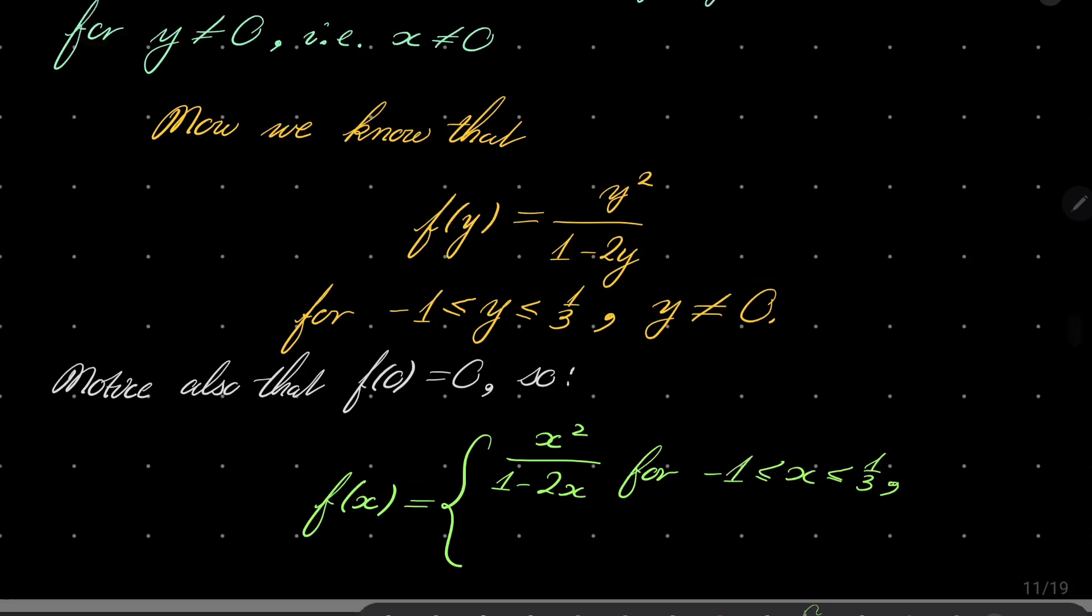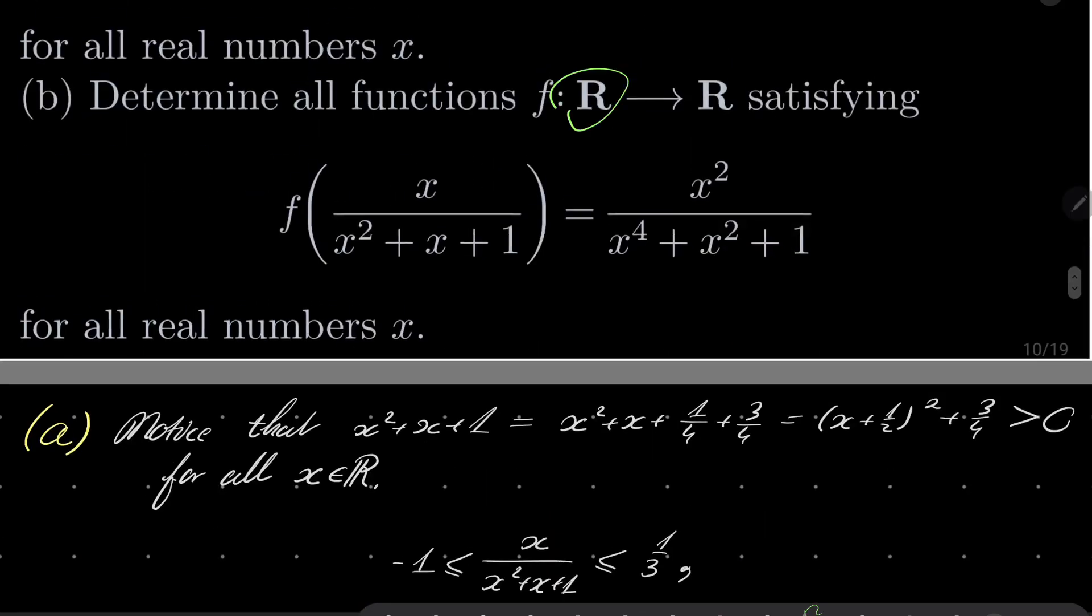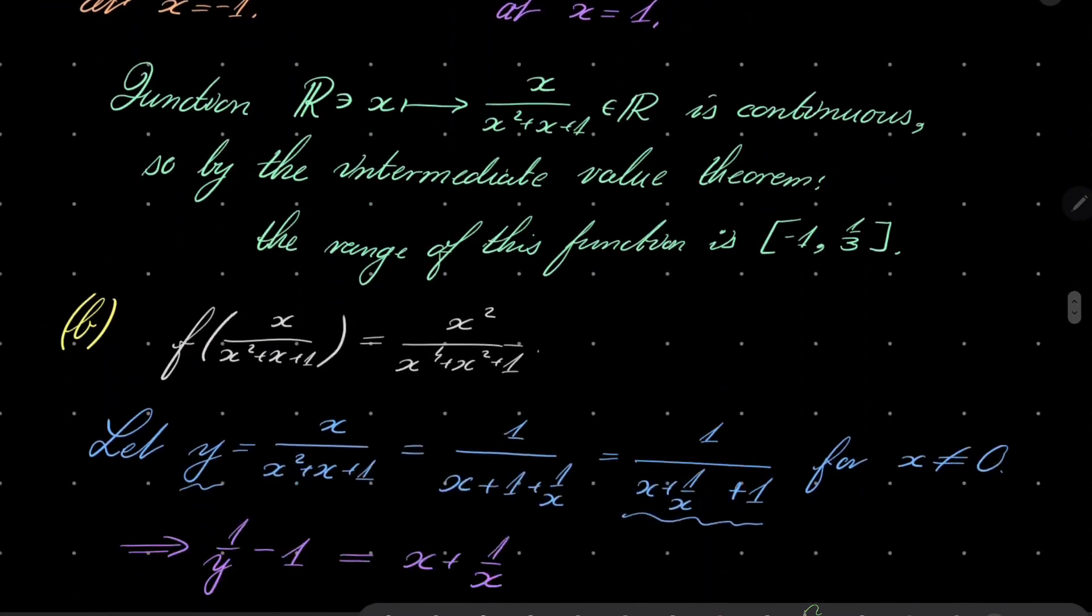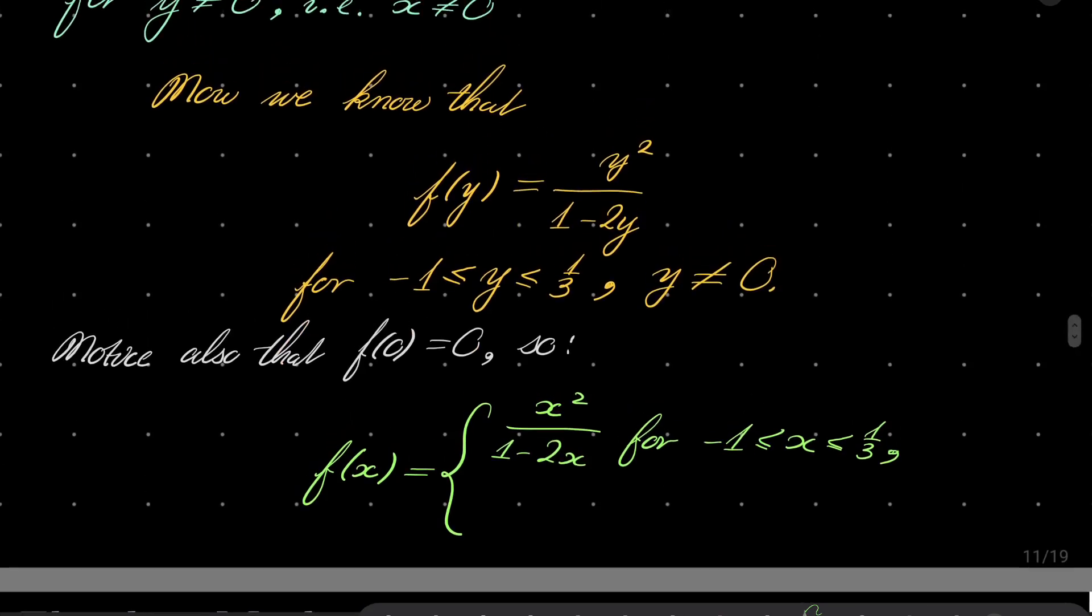And what about the rest? Because remember that our function is defined over the whole set of real numbers. What about the other values of our function? Well there are absolutely no constraints on the other values, which means that it can be anything for x in the set minus infinity to minus 1 union 1 third to plus infinity, because our functional equation does not say anything about the values of our function for these arguments.